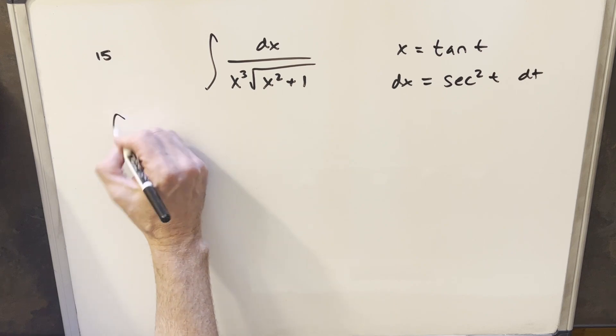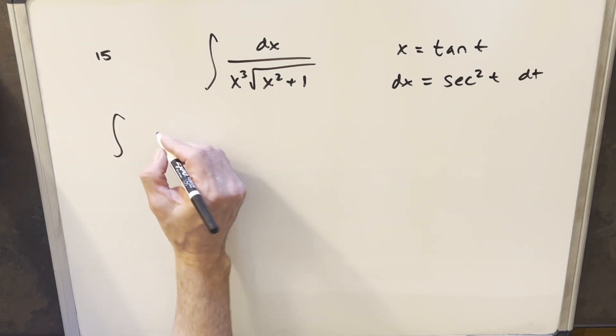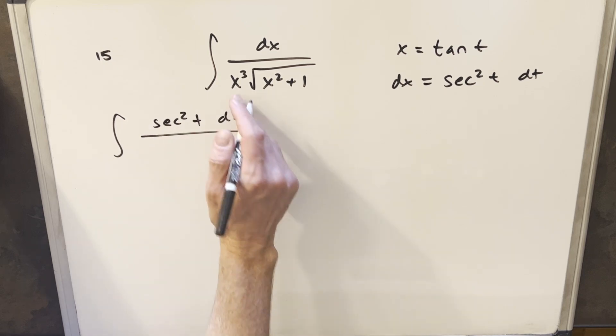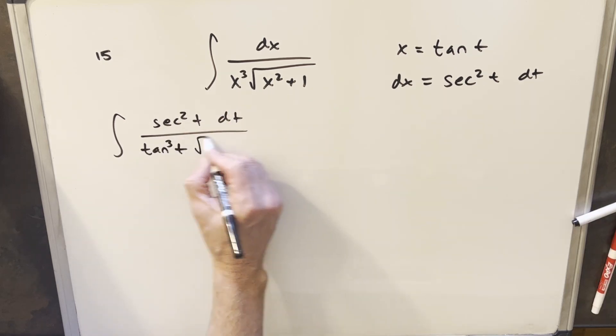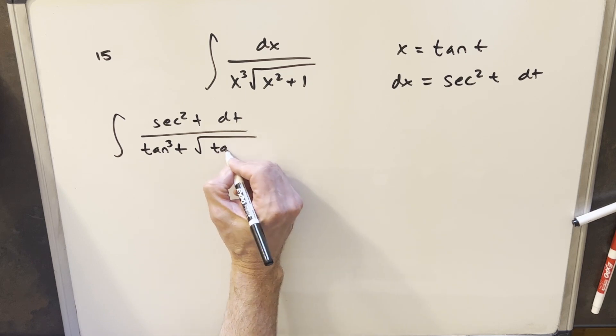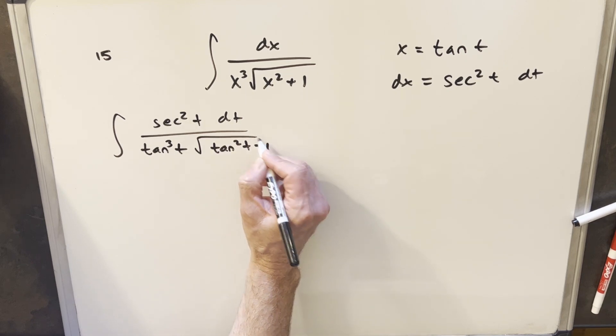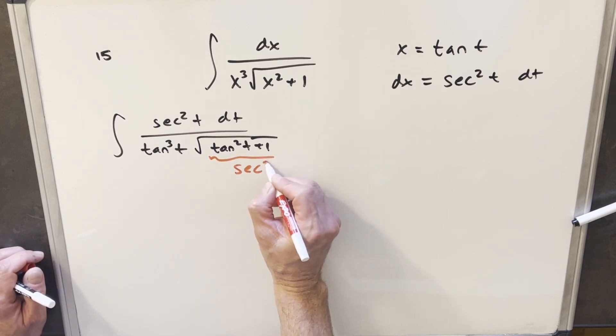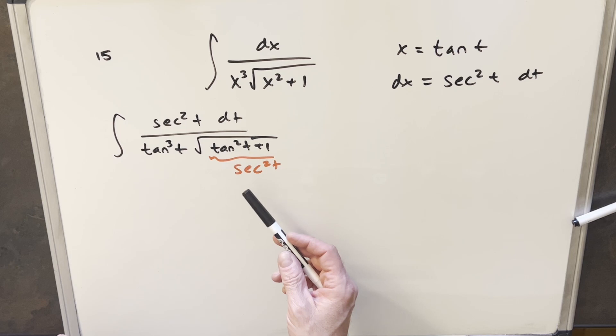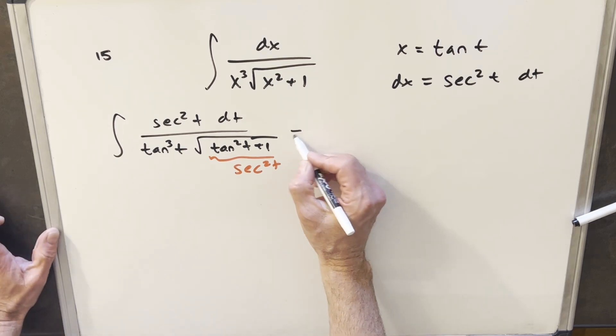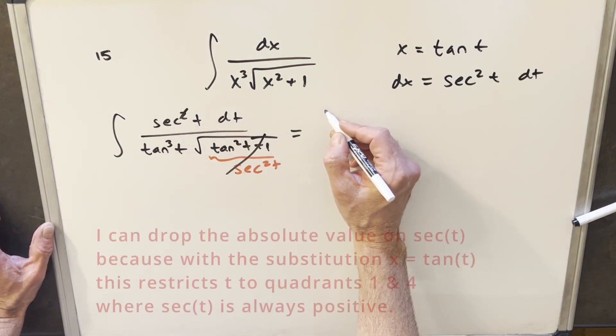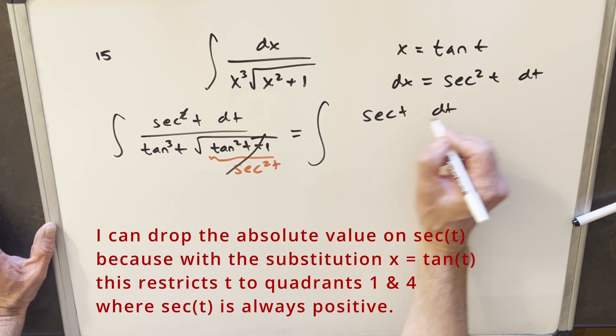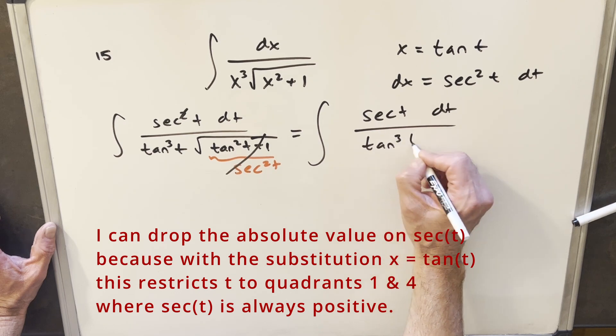Then we'll just plug in values over here. So our numerator is going to become our dx value, which is secant squared t dt. Here we're going to have tan cubed. And then inside the square root, we're going to end up with tan squared t plus 1. Well, we can use an identity on this. Tan squared t plus 1 is the same thing as secant squared t. But it's inside the square root. So what we can do is take this and cancel with one of our secants. And we're going to end up with the numerator of secant t dt. And then this is going to become just tan cubed t.